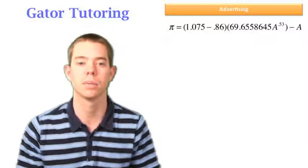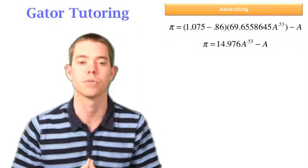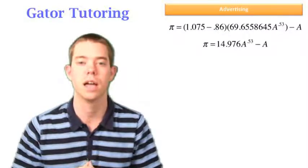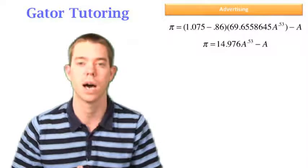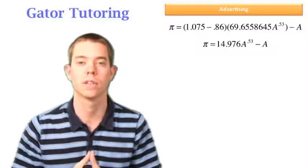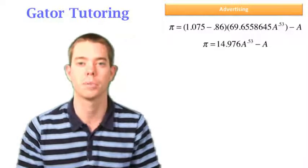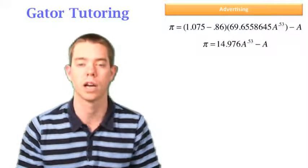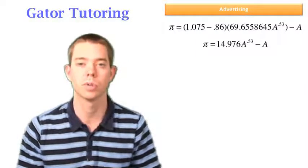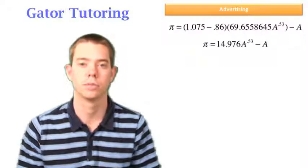We can now clean this up a bit and get profit equal to 14.976 A raised to the .53 minus A. We're ready to take the derivative of this with respect to A and solve to optimize profit based on our level of advertising. So A is our variable and we're going to maximize profit picking A.